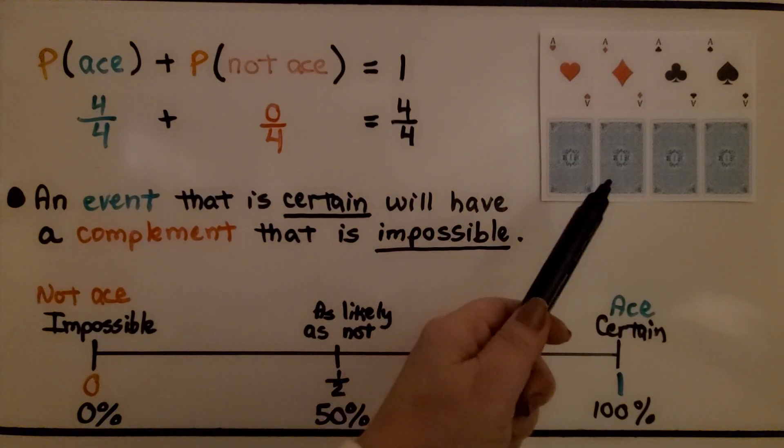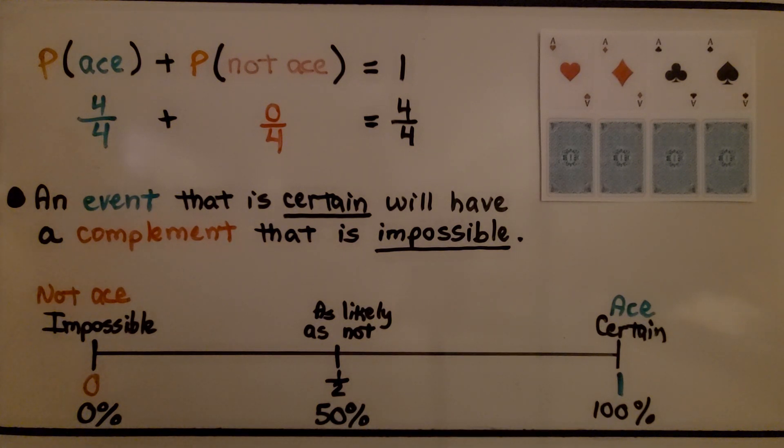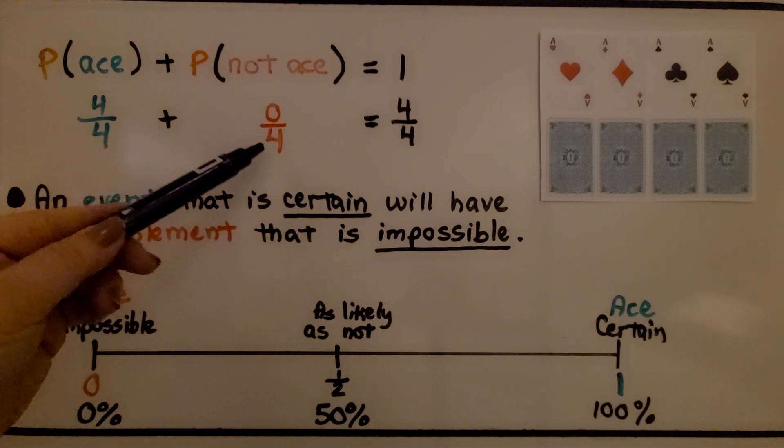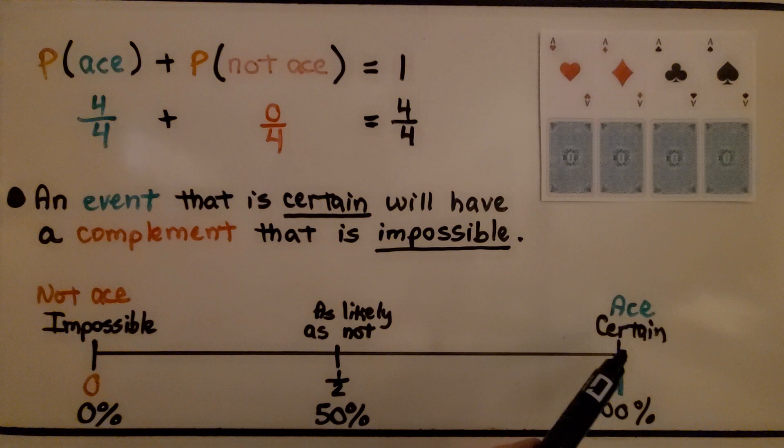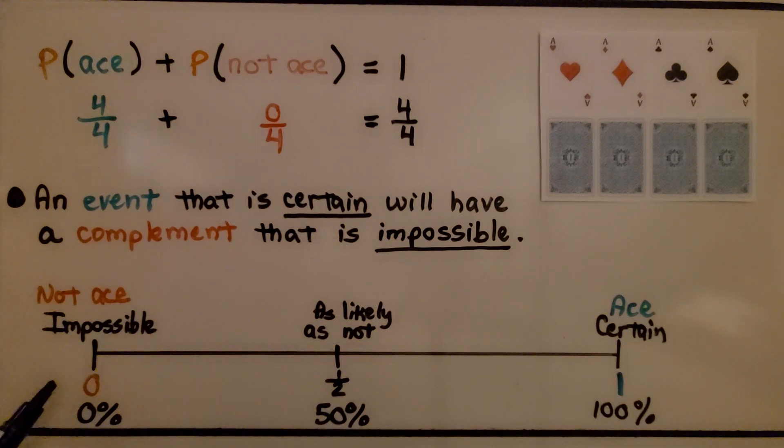Here we have four aces. We can turn them over and shuffle them. The probability of picking an ace would be 4/4. It would be one whole. The probability of not picking an ace would be 0/4. It would be zero because they are all aces. We have a zero chance of it not being an ace. An event that is certain will have a complement that is impossible. It's certain that we will pick an ace because they are all aces. And for it to not be an ace would be zero. That would be impossible. So an event that is certain, picking an ace, will have a complement that is impossible, not an ace.